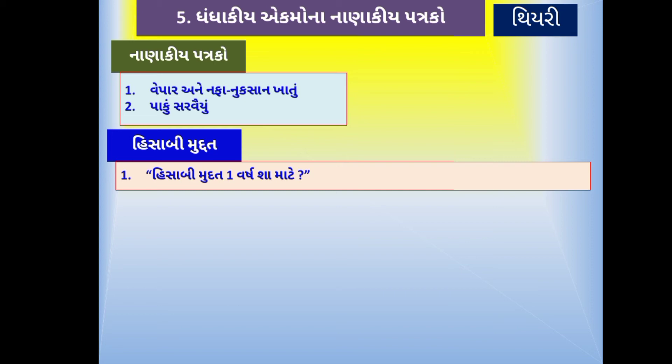વિદ્યાર્થી તરીકે વિષયને લગતા પ્રશ્નો ઉદ્ભવે તે જરૂરી છે અને સ્વાભાવિક પણ છે. જો રેઇનકોટ અને છત્રીનો વેપાર કરતો વેપારી ઉનાળામાં હિસાબ કરે, તો તેનું પરિણામ ખોટ દર્શાવે. નફ્ફાનું પ્રમાણ એકાંગી જોવા ન મળે, માટે એક વર્ષમાં તમામ ભાર, તમામ પ્રસંગો, તમામ ઋતુઓ આવી જાય — માટે હિસાબી મુદ્દત એક વર્ષની રાખવામાં આવે છે.